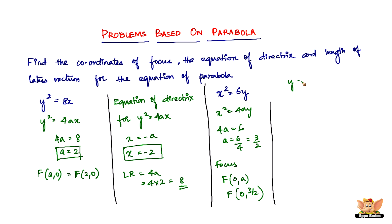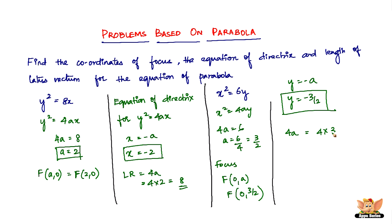Next, the equation of the directrix for x² = 4ay is given by y = −a. Since a = 3/2, the equation of the directrix is y = −3/2. Finally, the length of the latus rectum is 4a = 4 × 3/2 = 6. So the length of the latus rectum of x² = 6y is 6 units.